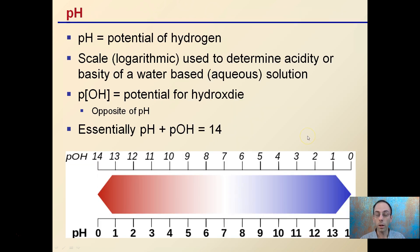Now, pH directly means potential of hydrogen. The scale is logarithmic. It's used to determine the acidity or basis of a water-based aqueous solution.